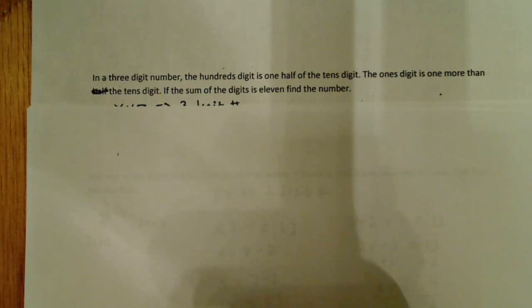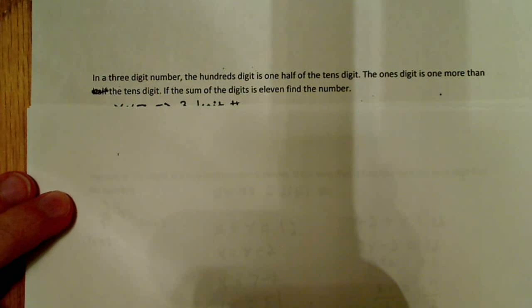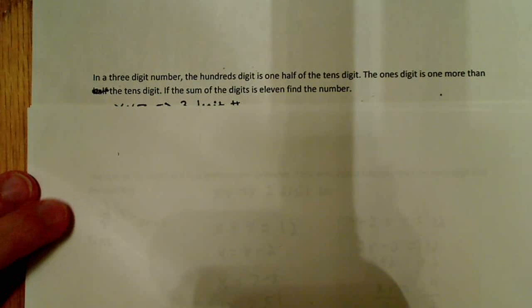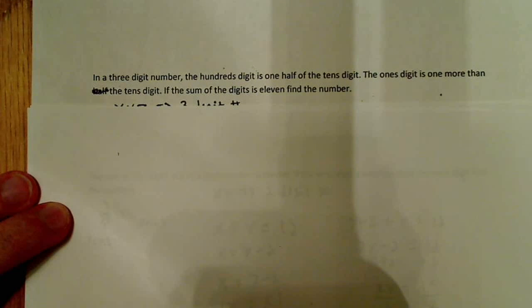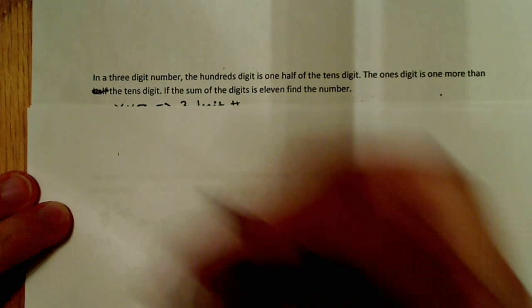The last problem I want to do involves three digits. It says: in a three-digit number, the hundreds digit is one-half of the tens digit. The ones digit is one more than the tens digit. If the sum of the digits is 11, find the number.